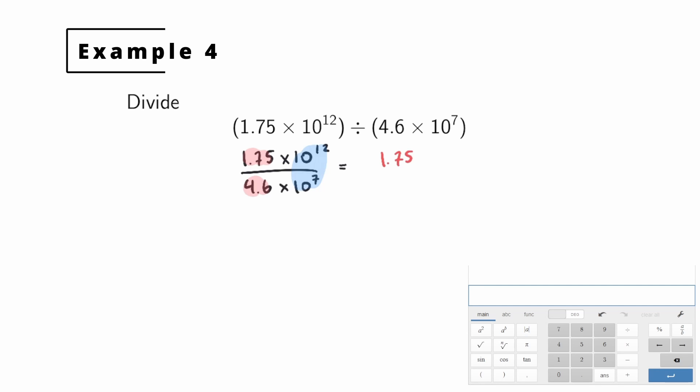So we will do it like this: 1.75 over 4.6, and then times 10 to the 12th over 10 to the 7th. Now to do the first division in red, we'll just use our calculator. So 1.75 divided by 4.6. You'll notice we get a really long number, so I'm going to round it to the thousandths place, the third decimal place. So I'll write approximately equals.